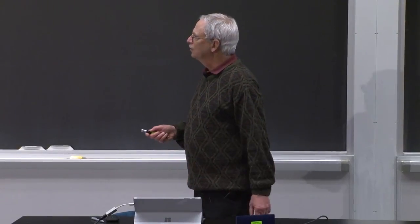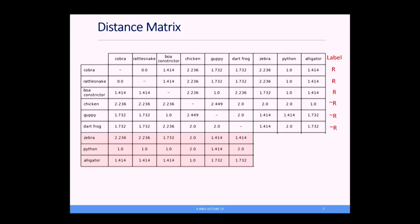Let's try it now for our animals. I've blocked out the lower right-hand corner because I want to classify these three animals shown in gray; the rest are my training data. First, classifying the zebra: its nearest neighbor is either a guppy or a dart frog — let's choose the guppy, which is not a reptile, so we say the zebra is not a reptile. Correct. For the python, its nearest neighbor is a cobra, which is labeled reptile, so we get that right too. For the alligator, its nearest neighbor is clearly a chicken, so we classify the alligator as not a reptile.